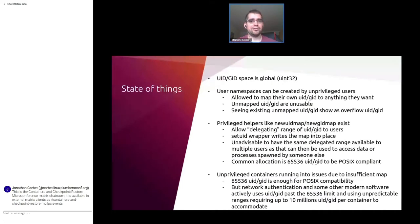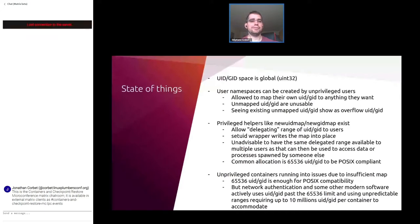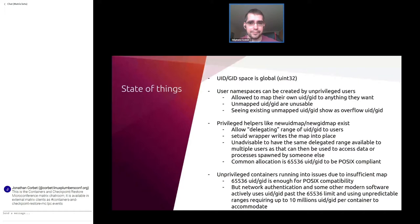There are a number of privileged helpers to make things nicer — mostly newuidmap and newgidmap from the shadow project. Those tools allow delegating a range of UIDs and GIDs to users via /etc/subuid and /etc/subgid. On Ubuntu and most distros, the default tends to be 65,536 UIDs and GIDs allocated per interactive user, allowing them to run a POSIX-compliant-ish environment using that range.